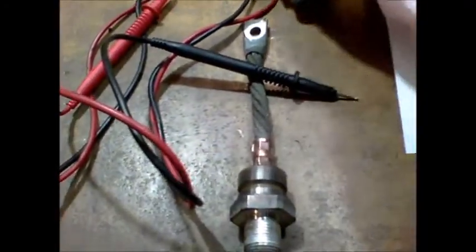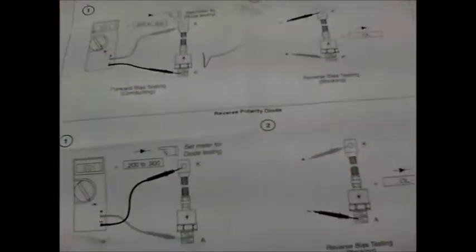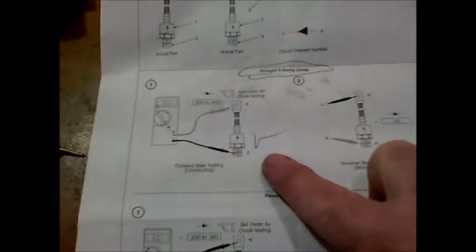Okay, so how do you know what flow is it? A straight polarity diode or is it a reverse polarity diode that you just pulled out of your welder?